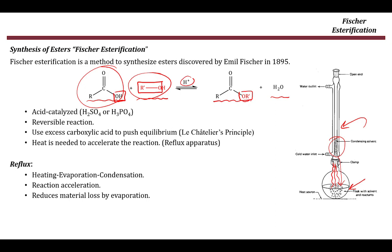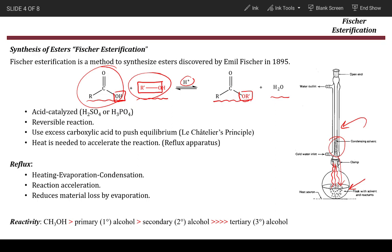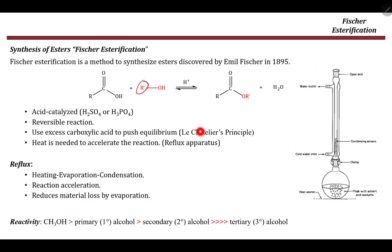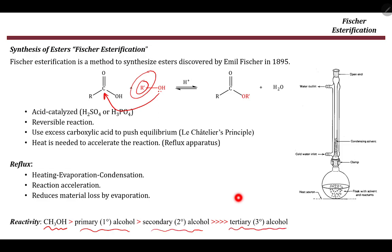In terms of reactivity, all alcohols can be used in this reaction, but as the size of the alcohol group increases, the reactivity decreases. This is because the alcohol acts as a nucleophile — it will attack the carbonyl — so as the size increases, nucleophilicity decreases and it becomes harder to attack the carbonyl. The reactivity order is: methanol, followed by primary alcohols, followed by secondary alcohols. Tertiary alcohols are very slow; the reaction almost does not occur with bulky tertiary alcohols.